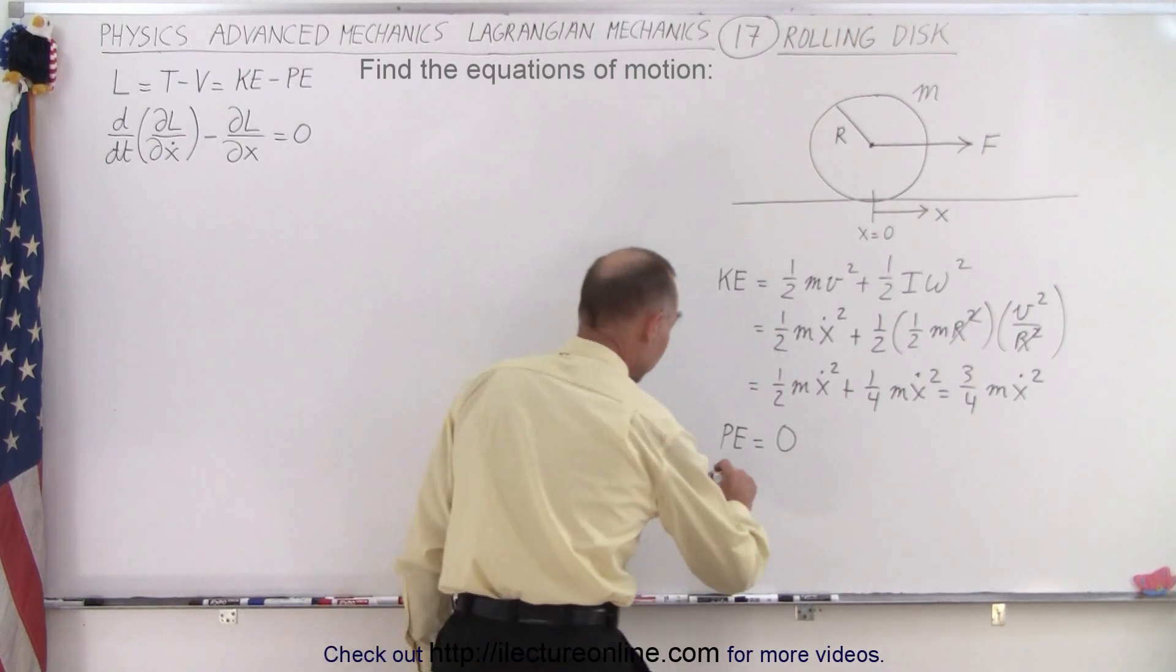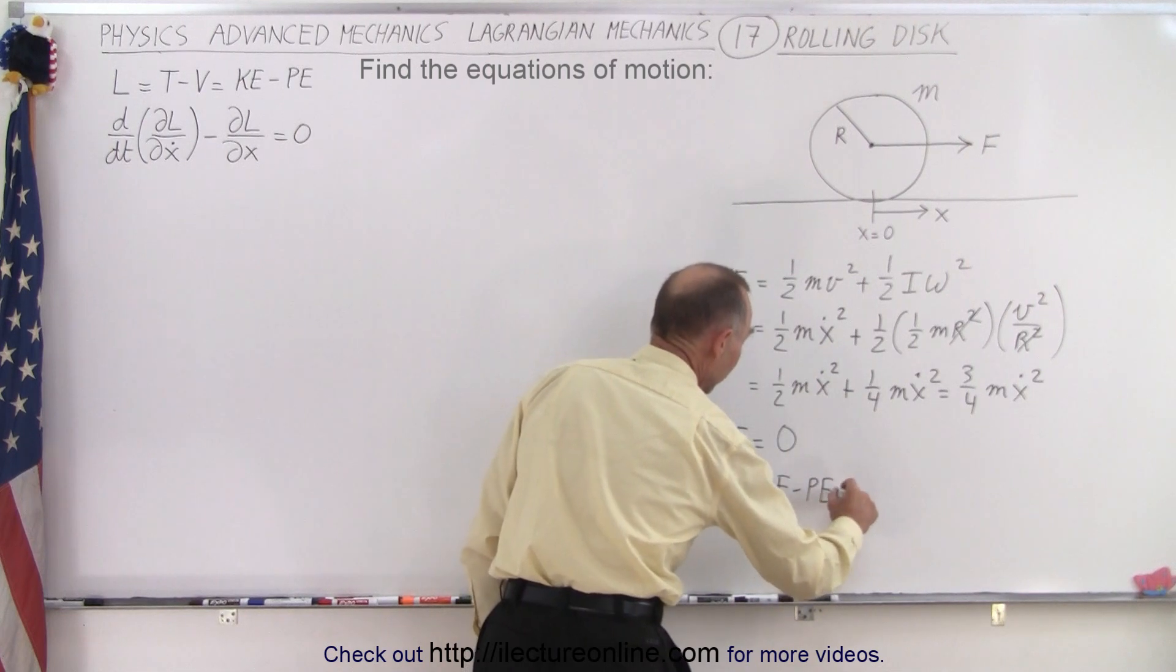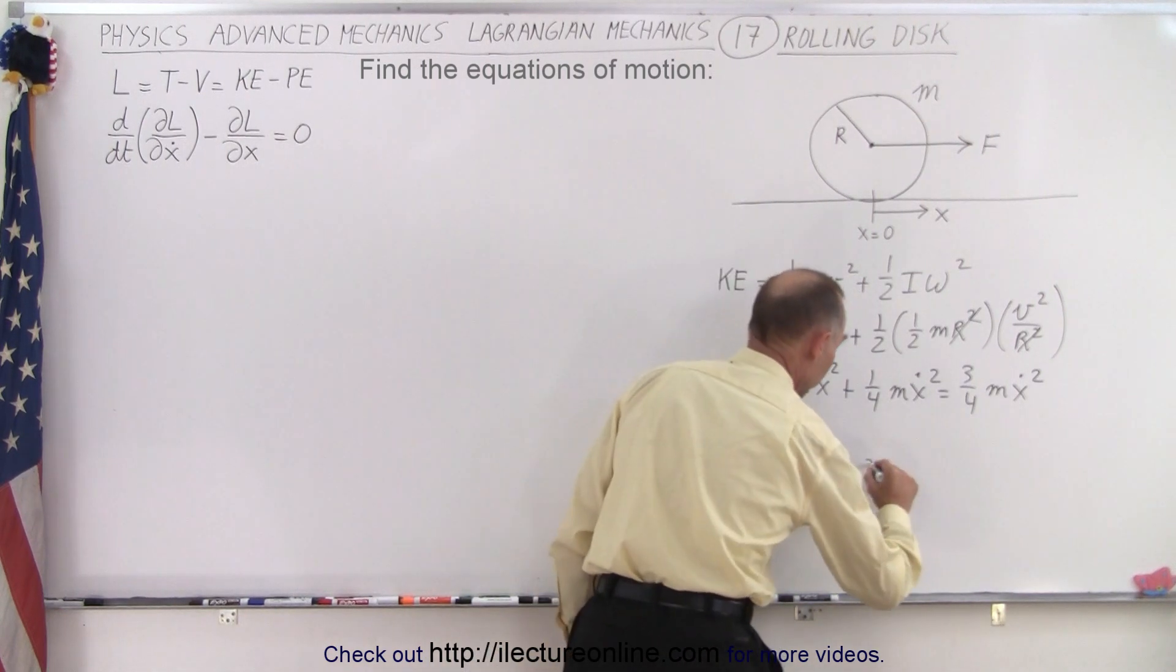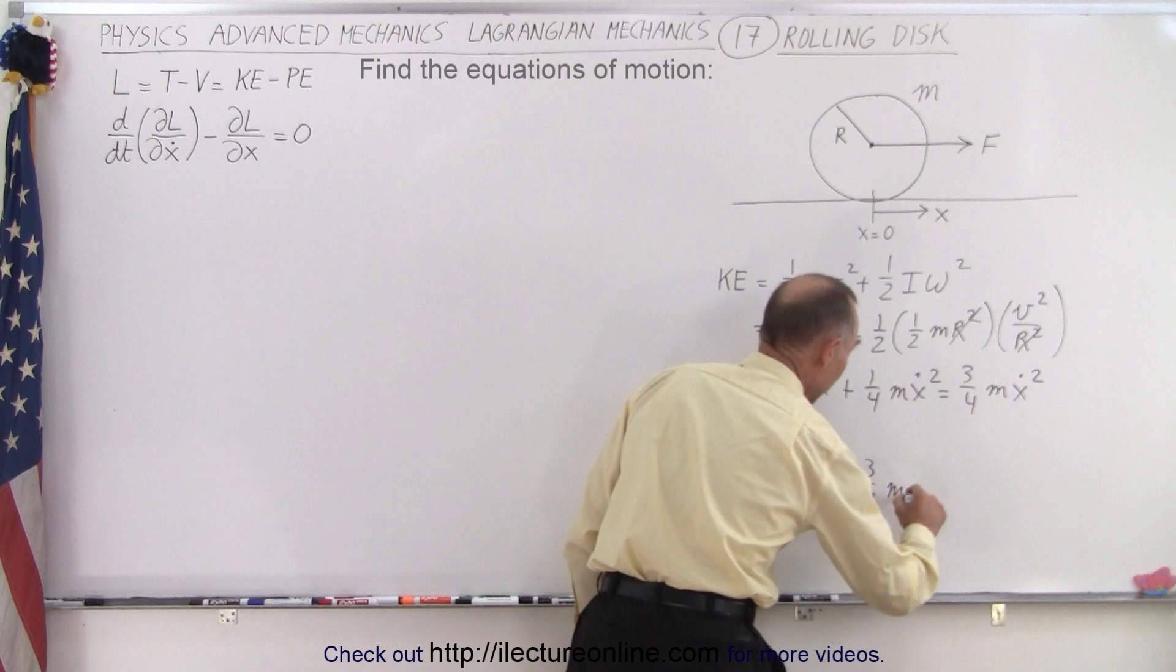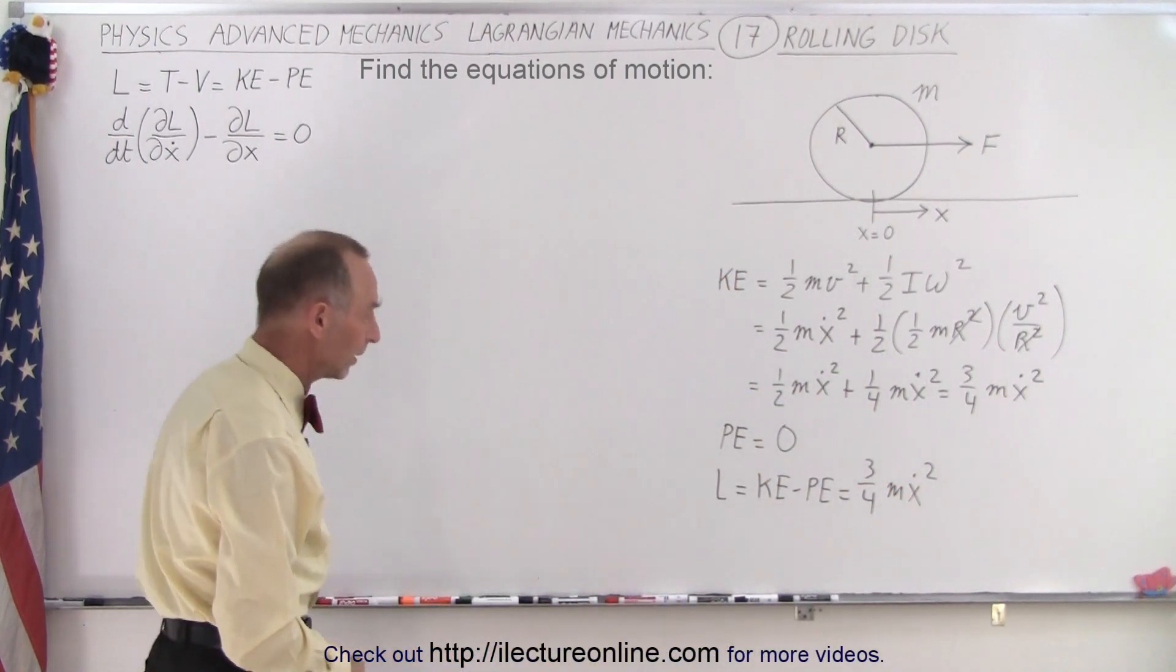Which means that the Lagrangian, which is equal to the kinetic energy minus the potential energy, will now be equal to three-quarters M x dot squared minus zero, or simply three-quarters M x dot squared.